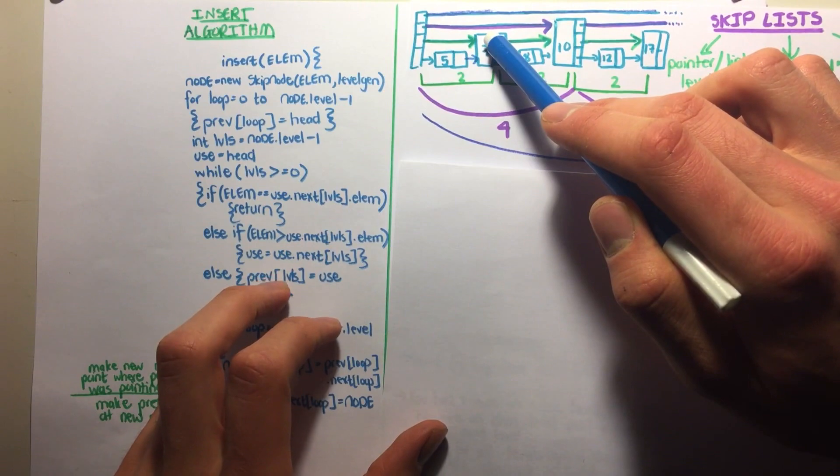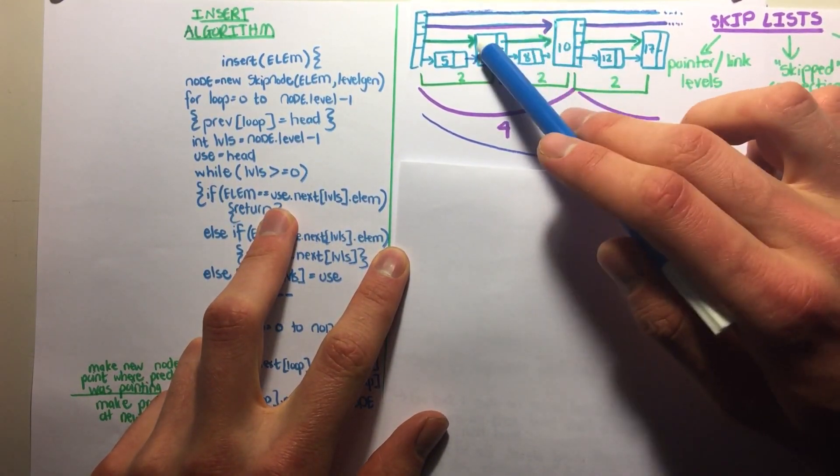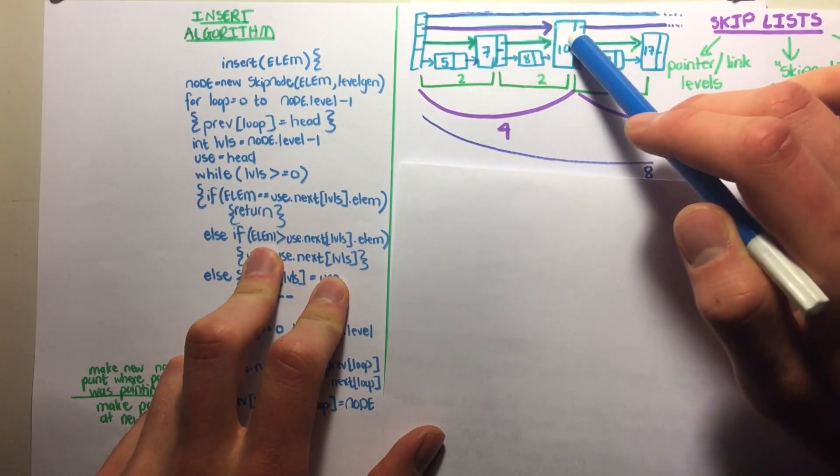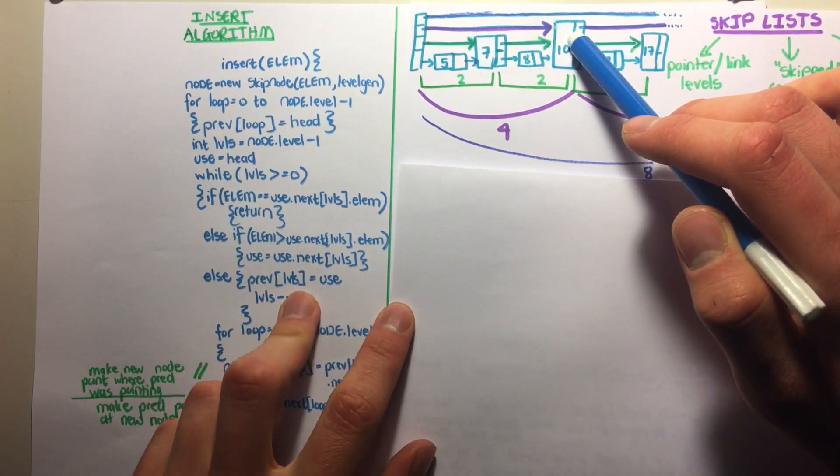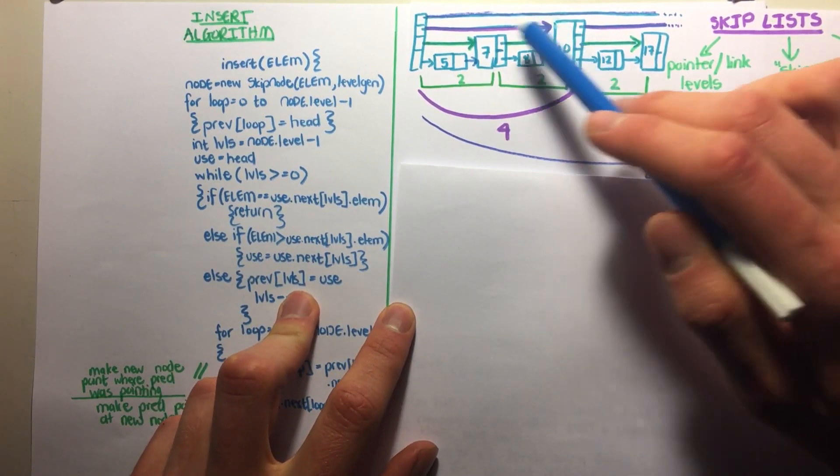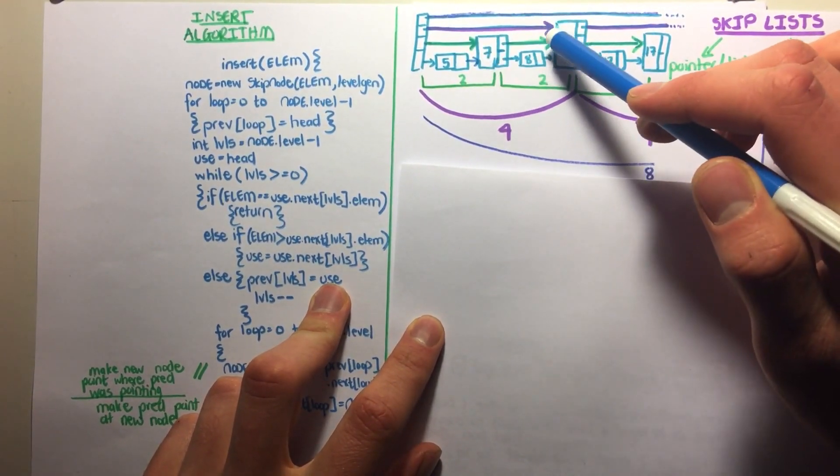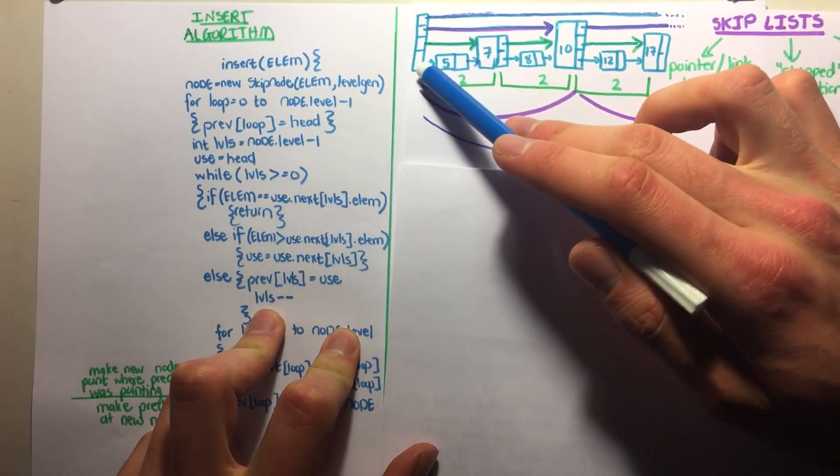Levels are still bigger than 0. We say if the element is equal to the next one, which is 10, which is not true. Else if element is bigger than 10, it's not. Therefore else, previous of level 2 will be made 7. So the predecessor of 9 at this level is 7. Levels minus minus, we go down another level.